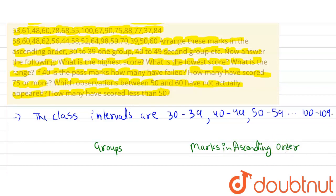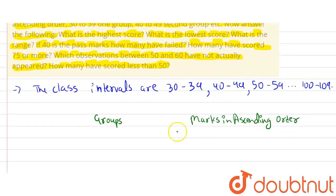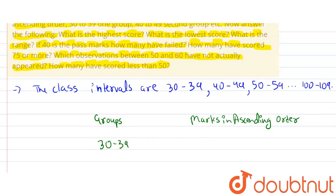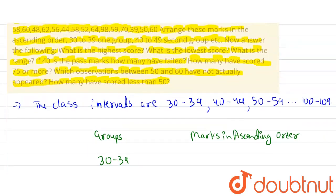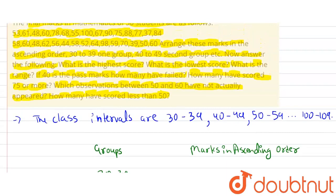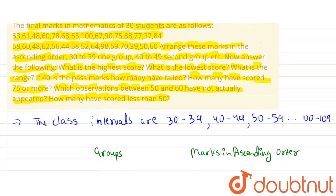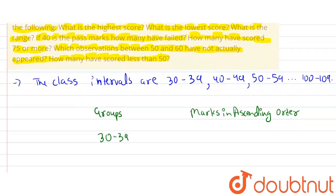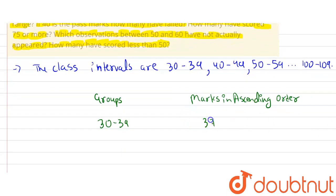Let's put the groups under this column. The first group is 30 to 39. Looking at the data, we can see there are two marks that lie under this group: 37 and 39.